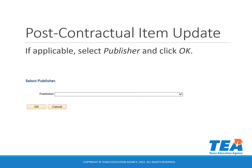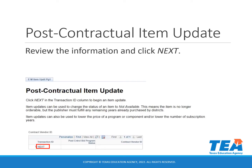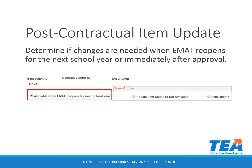You will select the publisher from the drop-down menu and click OK. You will need to review the information at the top of the page in EMAT and click Next. On the next page, there will be additional instructions at the top of the page — please review those carefully first. Then you will need to determine if the changes are needed when EMAT reopens for the next school year or immediately after approval. The check box automatically defaults to available when EMAT reopens for the next school year, so if the changes are needed immediately after approval, you will need to uncheck that box.